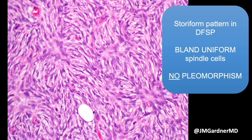Here is the classic storiform pattern — a tighter storiform pattern than what you see in dermatofibroma. The cells are bland, uniform, thin, stretched-out spindle cells with no pleomorphism, with the rarest of exceptions. I think I have seen precisely one DFSP with pleomorphism, and it had been previously radiated — it was a recurrence post-radiation, and the radiation may have contributed to the pleomorphism in that case.